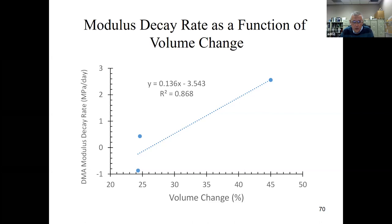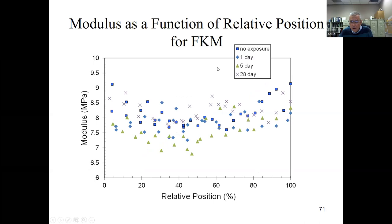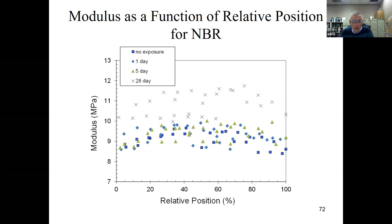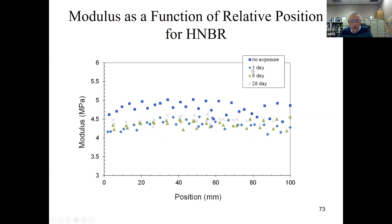Modulus profile results for FKM: no exposure, one-day, five-day, 28-day — clearly the five-day is lower than unexposed. For NBR, modulus as a function of relative position shows decreasing modulus with exposure time across one-day, five-day, and 28-day. For HNBR, modulus is clearly lower in all exposed samples. Summary: decreased low-strain modulus (softening/Mullins effect) and modulus decay are explained by swelling and stretching under CO2 pressure.